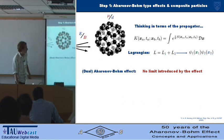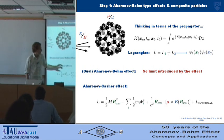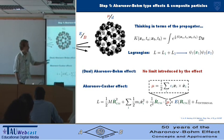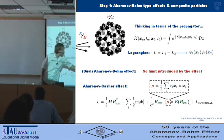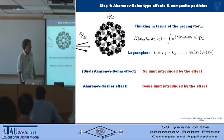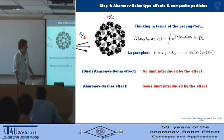However, if you think about the Aharonov-Casher effect, then the Lagrangian contains a coupling with the magnetic moment, and we won't be able to remove that. So that contains the internal variables, and it's coupled to the centre of mass through the electric field. So there's some limit introduced by that, because we've coupled the centre of mass and the internal variables just by doing the experiment.